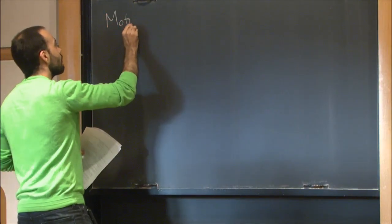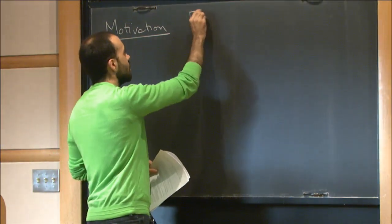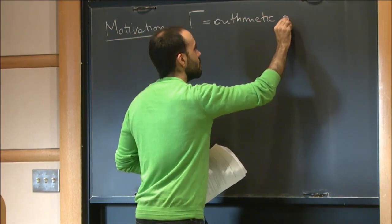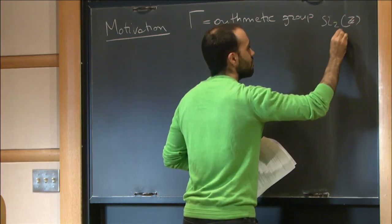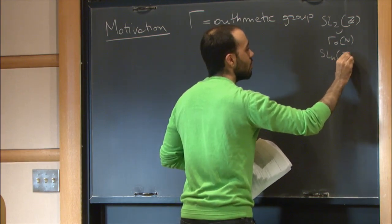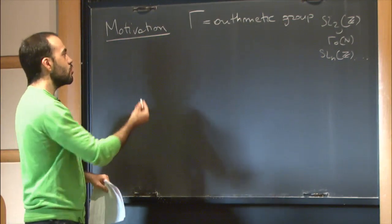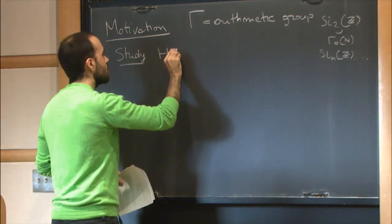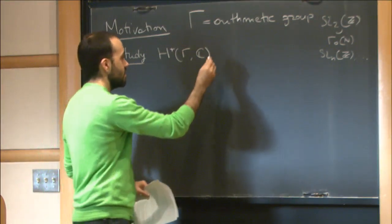So, motivation. What we want to study are arithmetic groups. My gamma is going to be an arithmetic group — you can think of SL2 of Z, or your favorite congruent subgroup, or SLN of Z. And more precisely, what we want to study about this arithmetic group is its cohomology, say with complex coefficients.